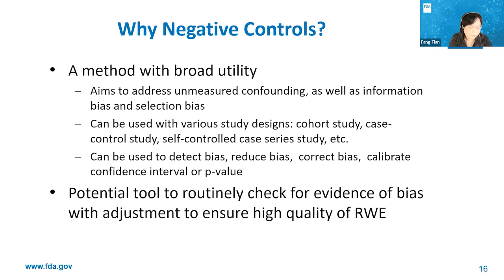Negative control methods have several nice features for use in non-interventional studies. The method has broader utility and aims to address all three types of bias. It can be used to detect bias, to reduce bias, and even to correct bias. Multiple negative controls can also be used to calibrate p-values and confidence intervals. Additionally, negative controls have the potential to be a tool to routinely check for evidence of bias without adjustment, to ensure high quality of real-world evidence.